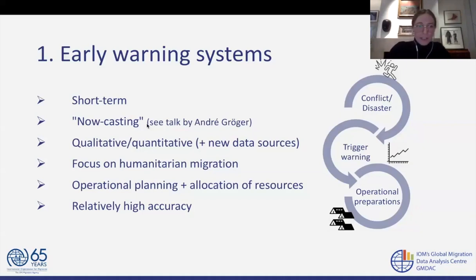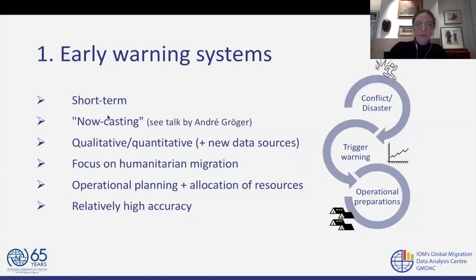By combining all these different data sources, early warning systems allow us to identify imminent migration surges and potential trigger events. They have been mostly practitioner-driven, focusing on humanitarian migration. As we've seen with the EU migration pact, the goal is really to facilitate operational planning, allocate resources, and become more active in reacting to new events. And because of the relatively short time horizons, they also present relatively high accuracy, which is attractive to users.